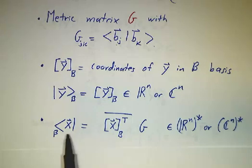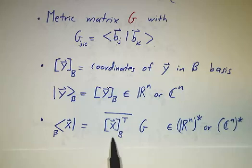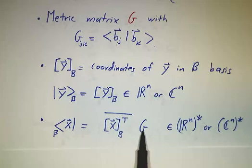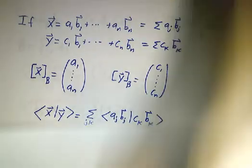I claim that the coordinates of a bra are given by a row, and the formula looks very much like the formula we had for a non-standard inner product. You have to take the coordinates of x, then take the transpose conjugate, and multiply by the metric matrix.